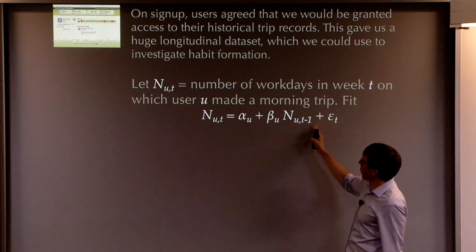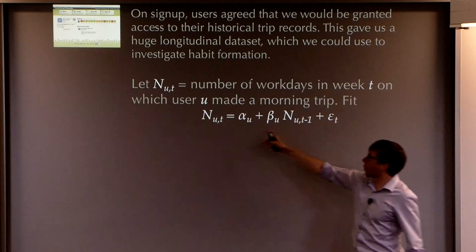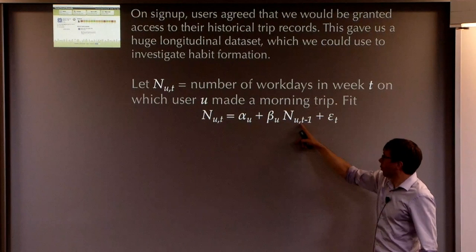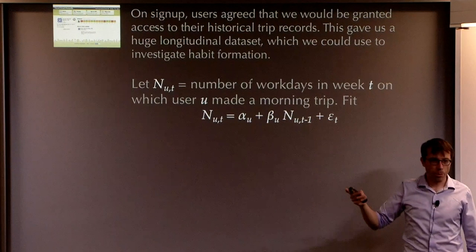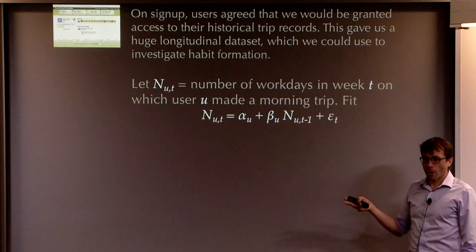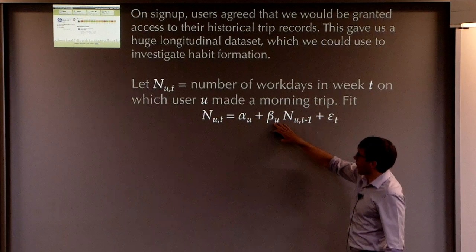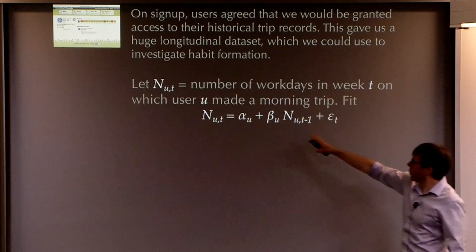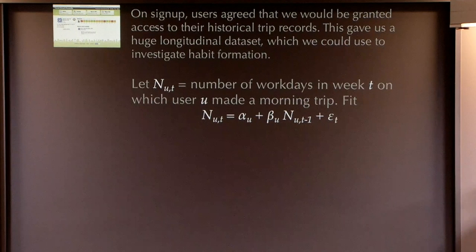And let's just stick in the most brain-dead model we can possibly imagine, which has some element of stickiness. So I'm going to fit the model, let NUT be alpha U plus beta U, NUT minus 1 plus a noise. So if I'm a user who's really habitual, and I always do the same this week as I did last week, then I would expect beta U to be pretty close to 1. And if I'm a user who every week is its own new challenge, then I'd expect beta U to be pretty much 0. So these parameters, alpha and beta, are the most brain-dead way we can get to get the first cut of stickiness in user behavior.